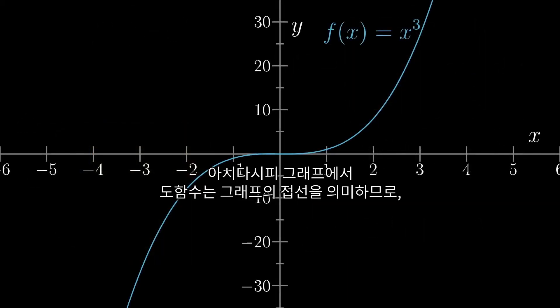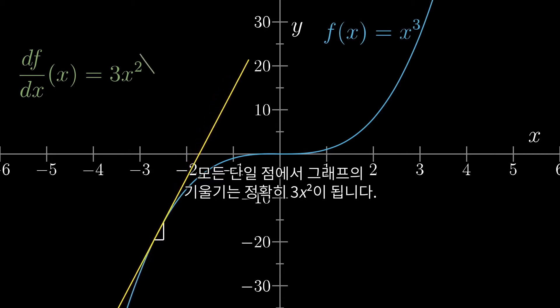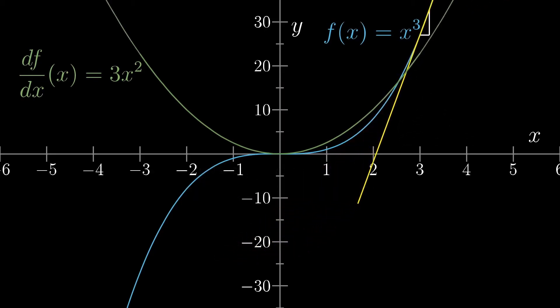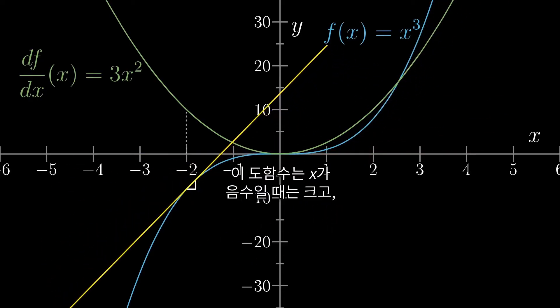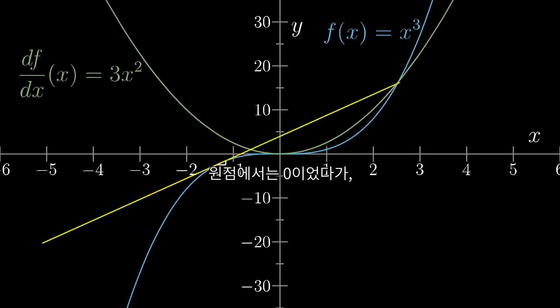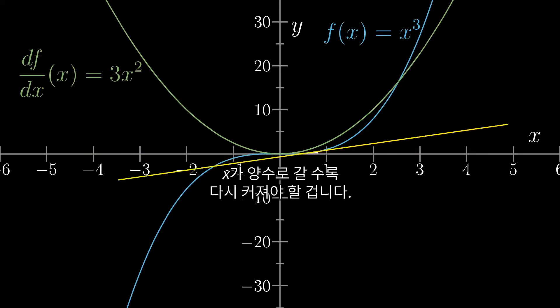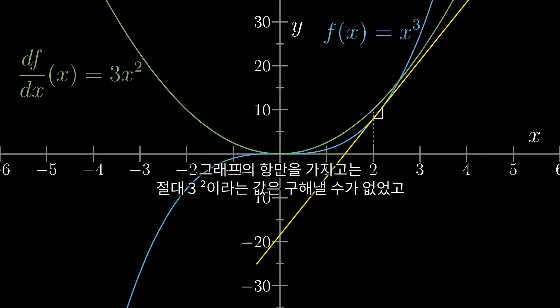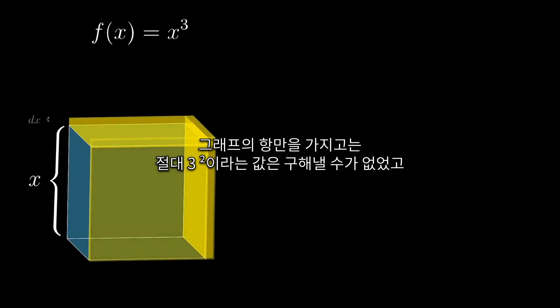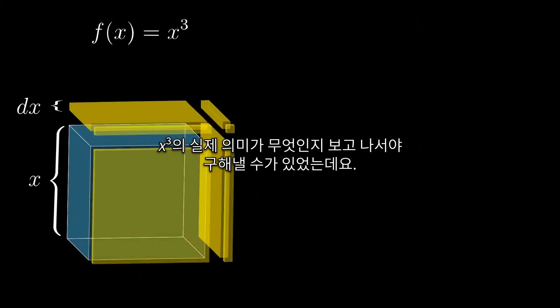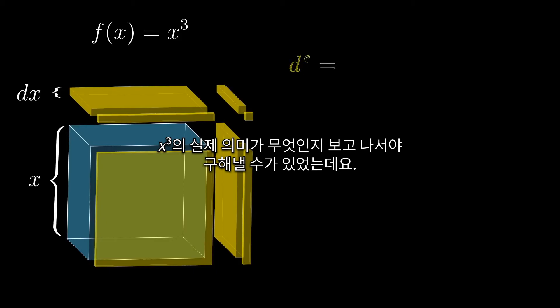What that means in terms of graphical intuition is that the slope of the graph of x cubed at every single point x is exactly 3x squared. And reasoning about that slope, it should make sense that this derivative is high on the left, and then 0 at the origin, and then high again as you move to the right, but just thinking in terms of the graph would never have landed us on the precise quantity 3x squared. For that, we had to take a much more direct look at what x cubed actually means.